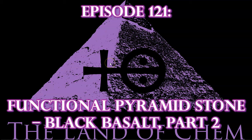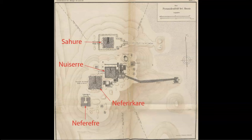Here we go with tonight's episode. To begin, in episode 88 I introduced the concept of black basalt being used as a material for heat storage at the Egyptian Pyramid Chemical Manufacturing Facilities and presented the research that supported this hypothesis. So now I will begin to explain exactly how these thermoregulatory properties were integrated into the system at the Pyramid of Nyusere in Abu Sir, which you can see here.